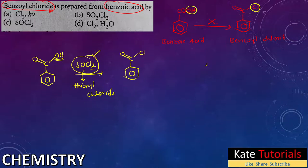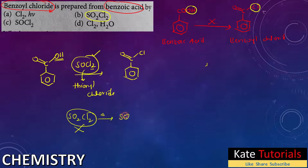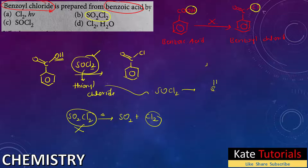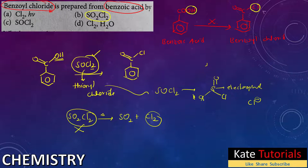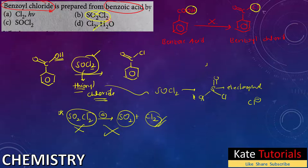What about SO₂Cl₂? We won't use this because SO₂Cl₂ on little heating decomposes to sulfur dioxide and chlorine gas. In thionyl chloride (SOCl₂), the structure is S(=O)Cl-Cl, and sulfur is electrophilic. In sulfonyl chloride, it decomposes on little heating into SO₂ and Cl₂, so we can't use it.